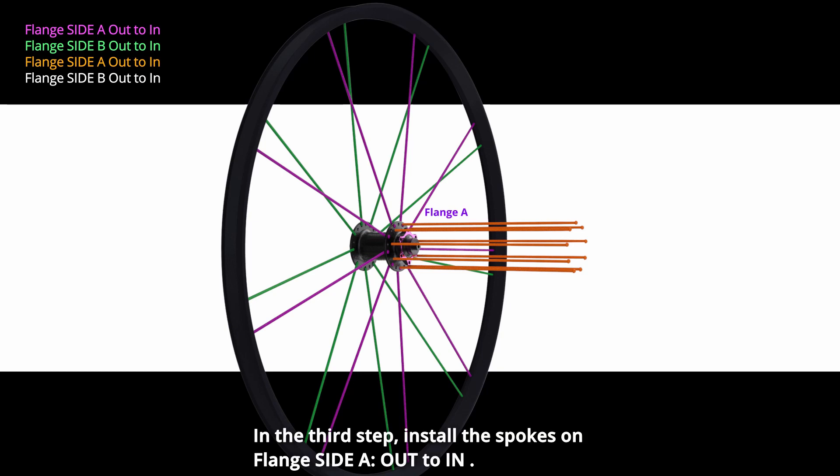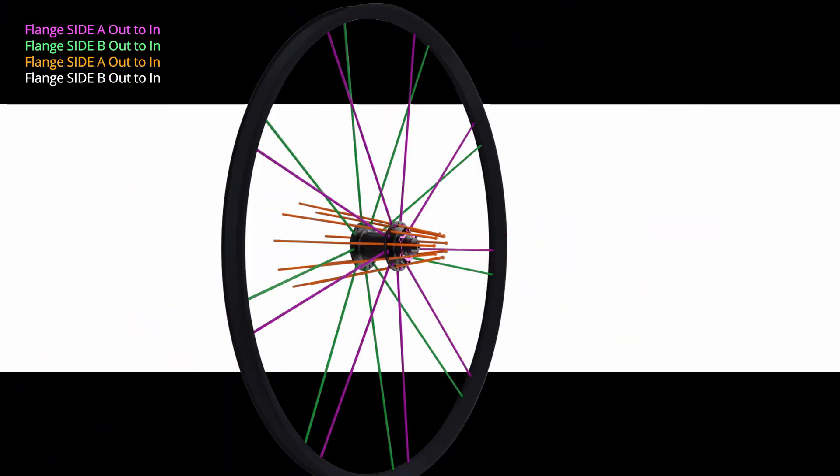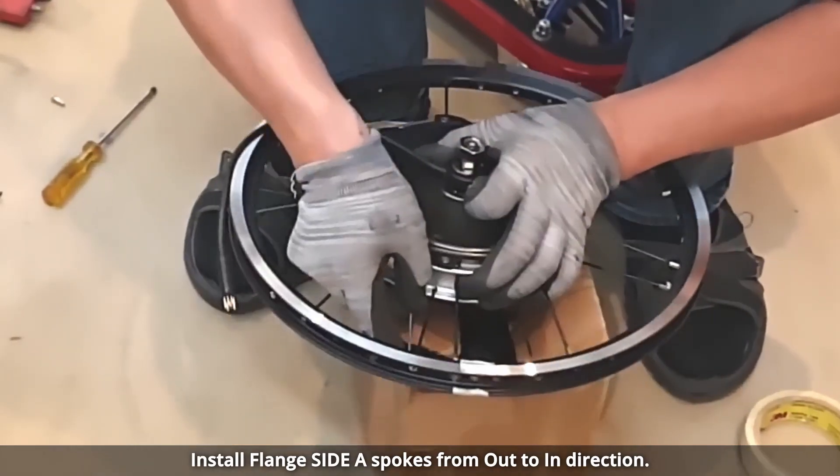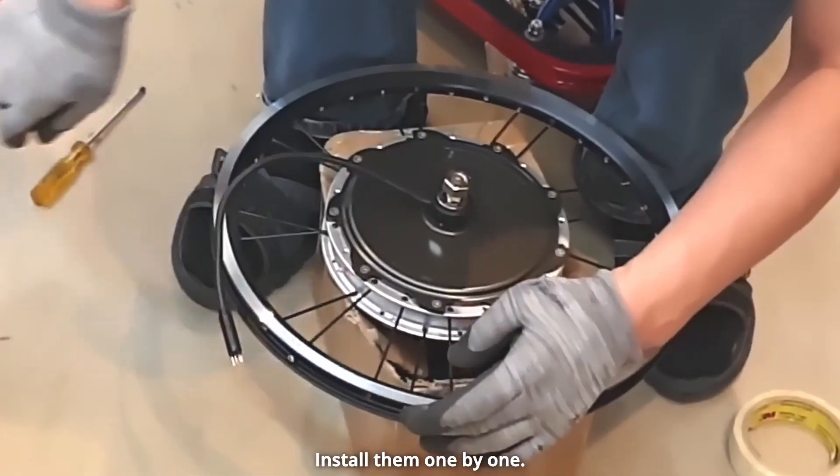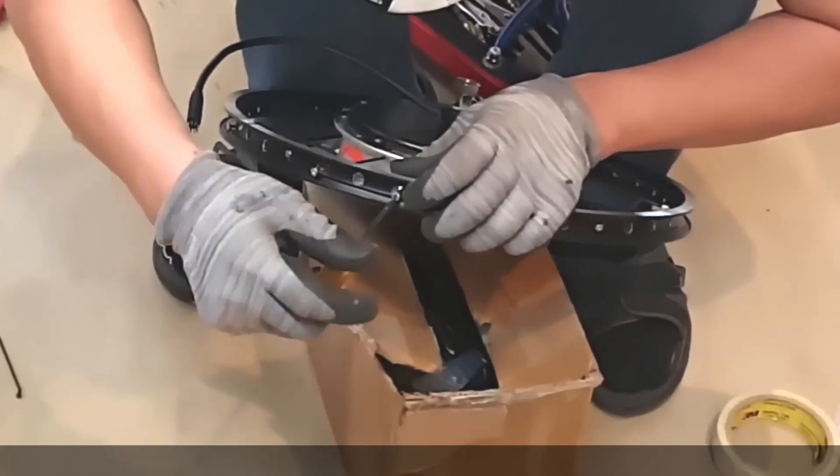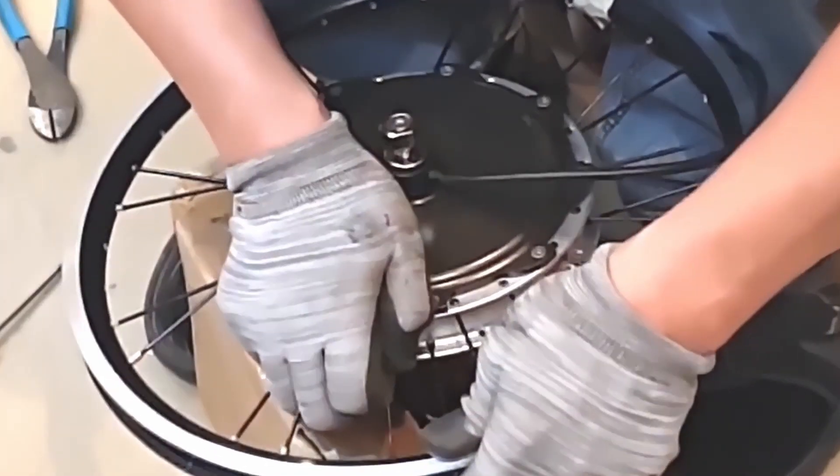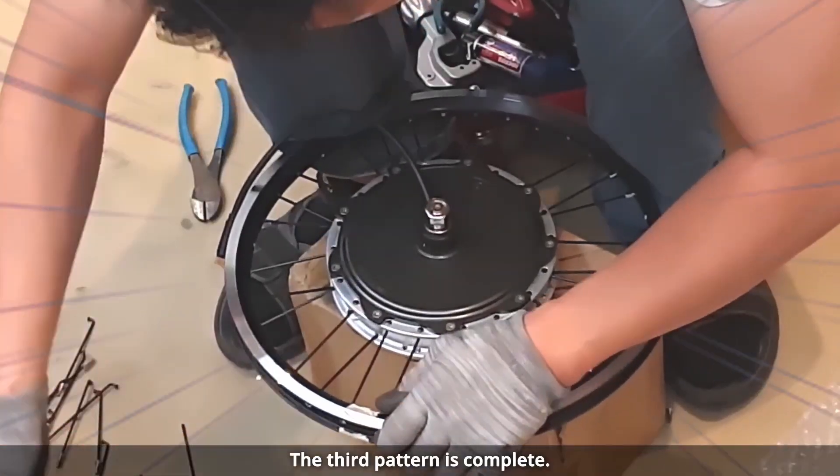In the third step, install the spokes on flange side A out to in. Install flange side A spokes from out to in direction. Install them one by one. The third pattern is complete.